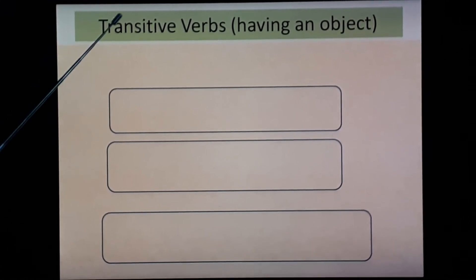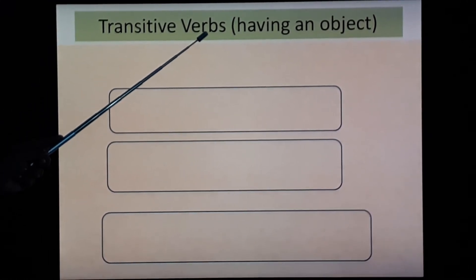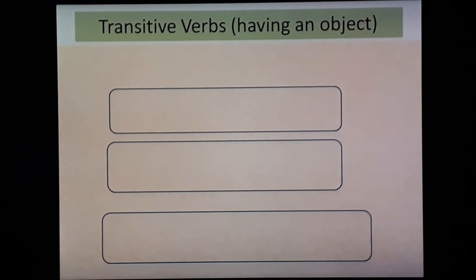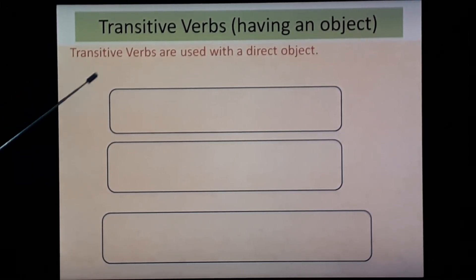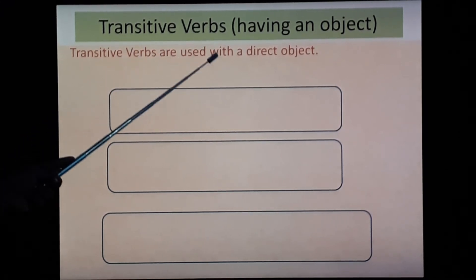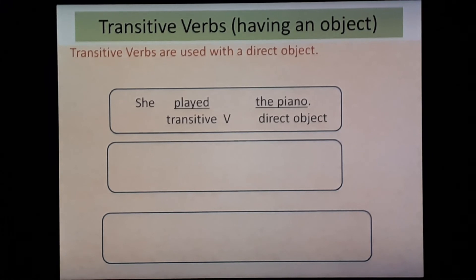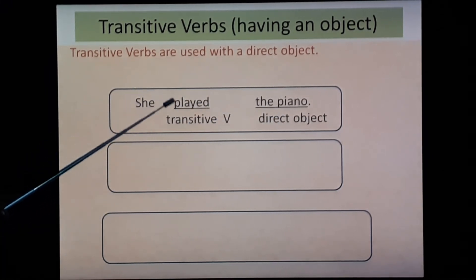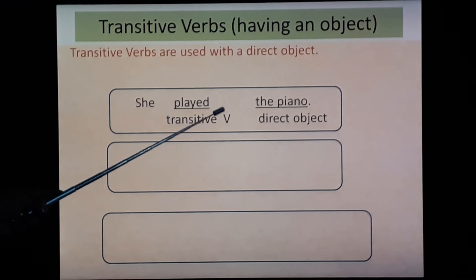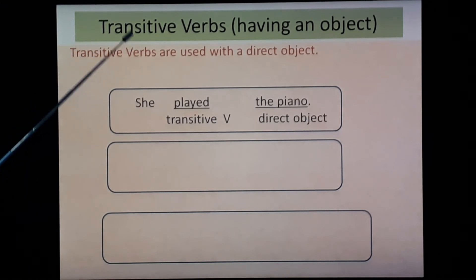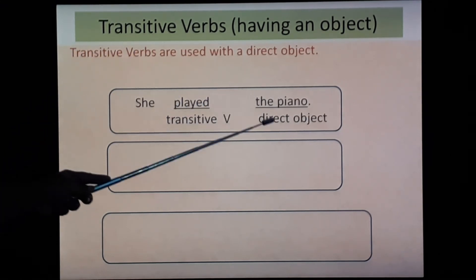Transitive verbs — it means they have an object. Transitive verbs are used with a direct object. For example, 'She played the piano' — 'played' is the transitive verb and 'the piano' is the direct object. 'Joy will write an email' — 'will write' is the transitive verb and 'an email' is the direct object. 'My mother took me to the market' — 'took' is the transitive verb and 'me' is the direct object.